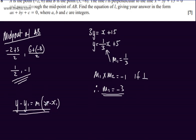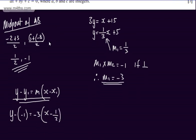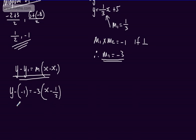You can, of course, use y is equal to mx plus c here. I'm simply going to use this form. We'll have y minus minus 1 is equal to minus 3, which is the gradient, and then we'll have x minus 1 half. We need this in the form Ax plus By plus C is equal to 0, so we'll have y plus 1 on the left-hand side, expanding the brackets, minus 3x plus 3 over 2.